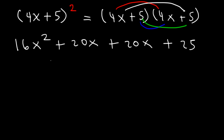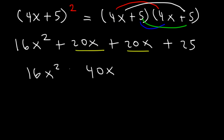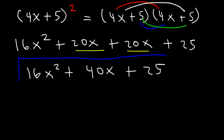So now, let's go ahead and add the two terms in the middle. 20x plus 20x is 40x. So the final answer is 16x squared plus 40x plus 25. And as you can see, it's not very difficult when multiplying two binomials together.